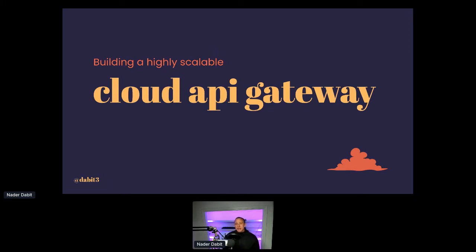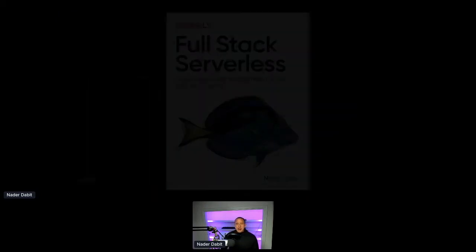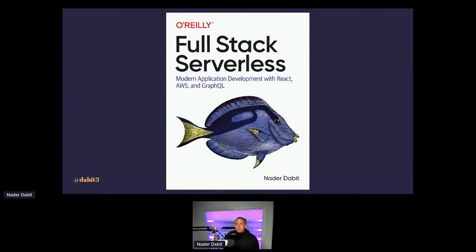We're going to be doing two things. We're going to have a 10 or 15 minute presentation, and then from the ground up I want to show you how to actually build one of these API gateways on AWS using GraphQL. We're going to do that from scratch using CDK. My name is Nader Dabit. I'm a senior developer advocate at AWS, currently leading the DevRel team for AWS web and mobile applications. I have a new book called Full Stack Serverless, available from O'Reilly Publications.